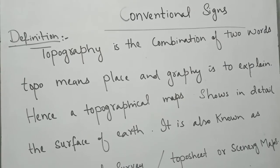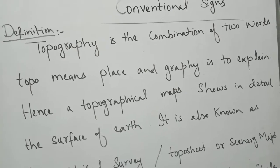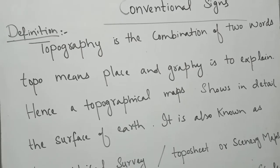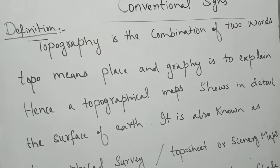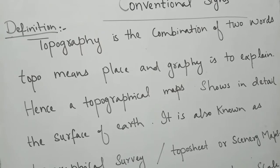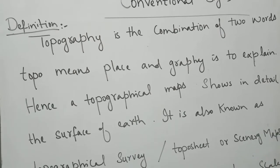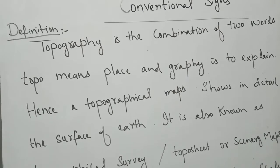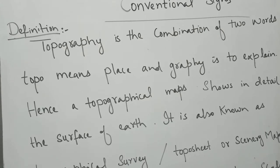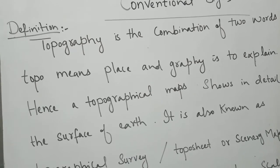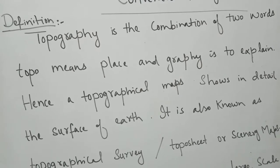Topography is basically a combination of two words. Everybody knows: 'topo' means place, and 'graphy' or 'graphian' means to explain or to describe. So in the simplest way, topography combines 'topo' meaning place and 'graphian' meaning to describe or explain.